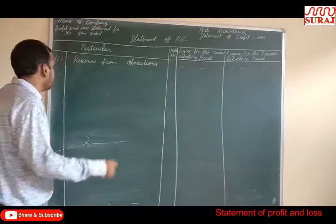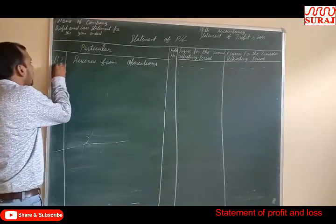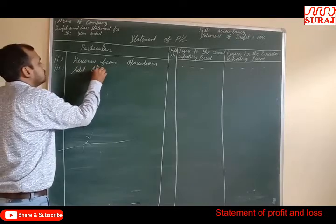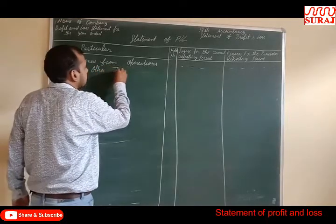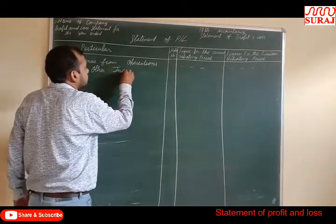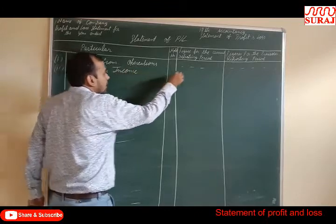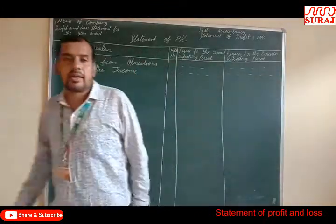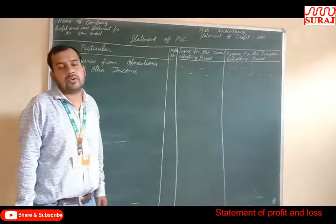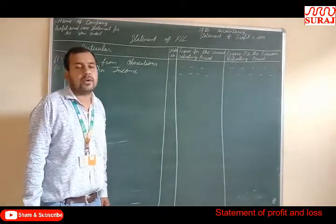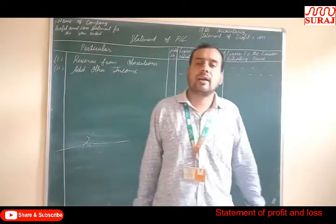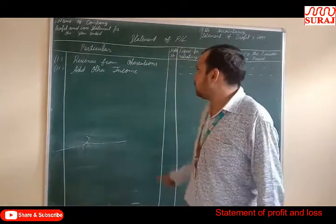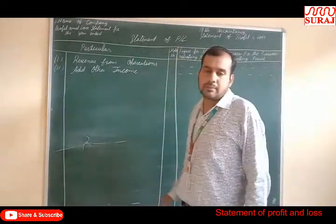Number 2: Add Other Income. This includes Rent Received, Interest Received, Dividend Received, Commission Received, and any other income. Non-operating income is included under Other Income.